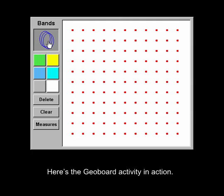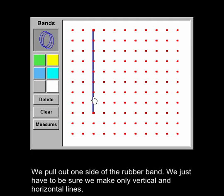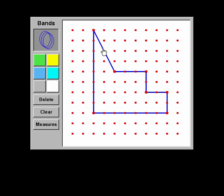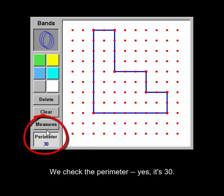Here's the geoboard activity in action. We take a rubber band and then stretch it around the pegs to start making a shape. We pull out one side of the rubber band. We just have to make sure we make only vertical and horizontal lines, but we could still form an interesting shape. There now, how's this? We count squares and spaces to find the area is 32 square units and the perimeter is 30 units. We check the perimeter. Yes, it's 30.